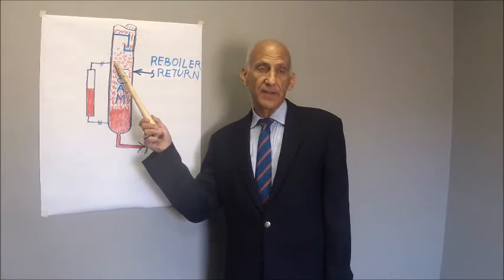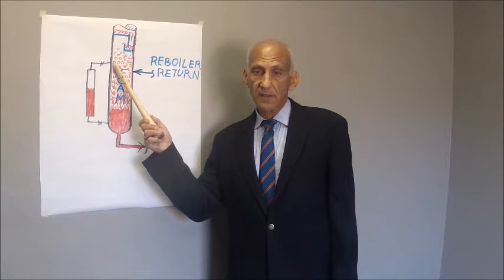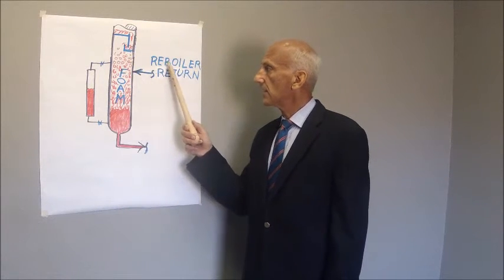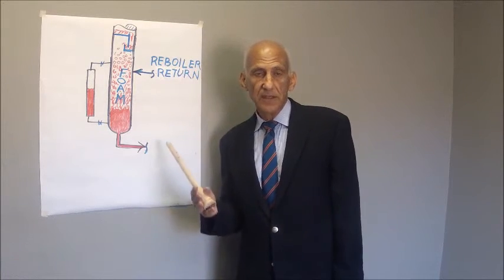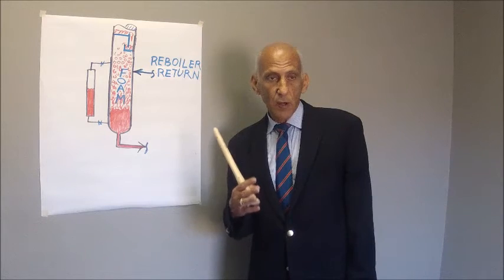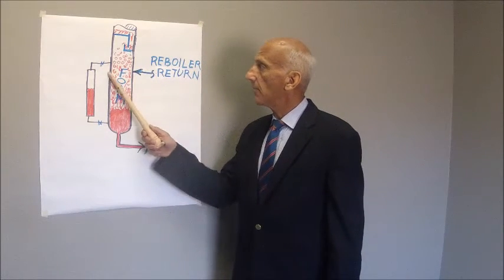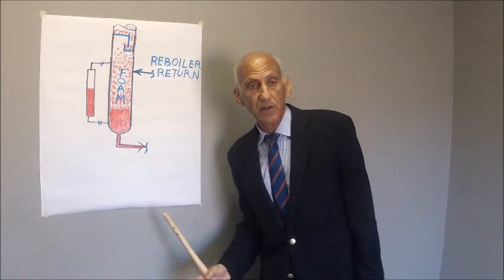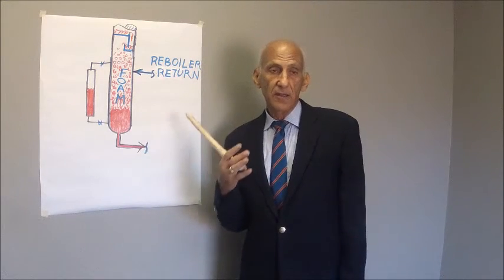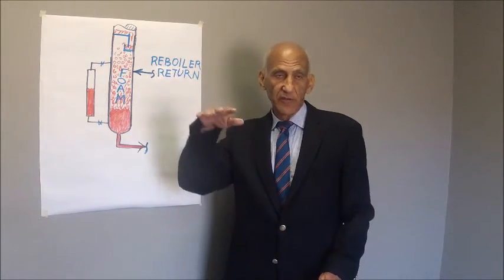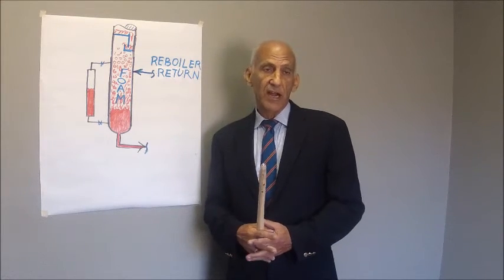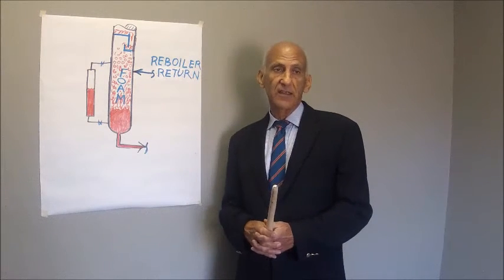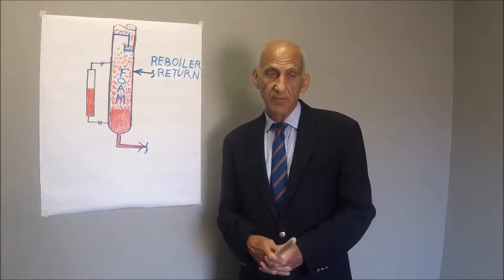Once the foam rises above the top tap, you could still only have half of the gauge glass full of liquid, but having the foam rise above the reboiler return or vapor inlet nozzle means the force of the vapor blowing below the foam level will blow the foam up into the bottom tray. Once the foam is blown into the bottom tray, the bottom tray is going to flood and then the flooding will progress up the tower. I call this very common problem foam-induced flooding. Again, let me remind you that the level you see in the tower is normally not represented by the level in the glass.